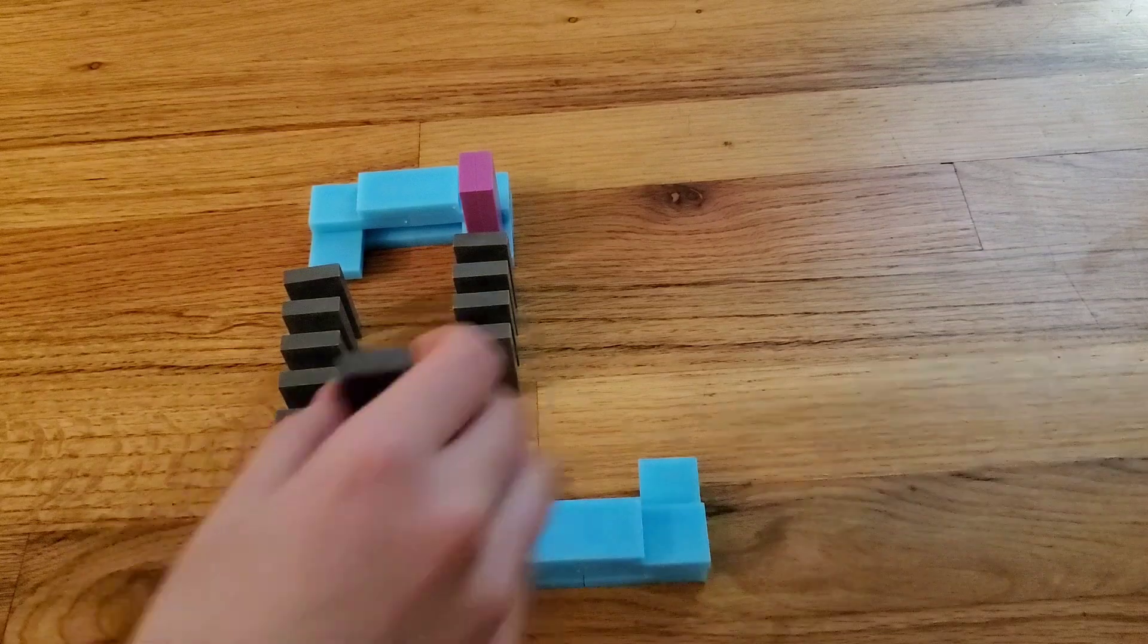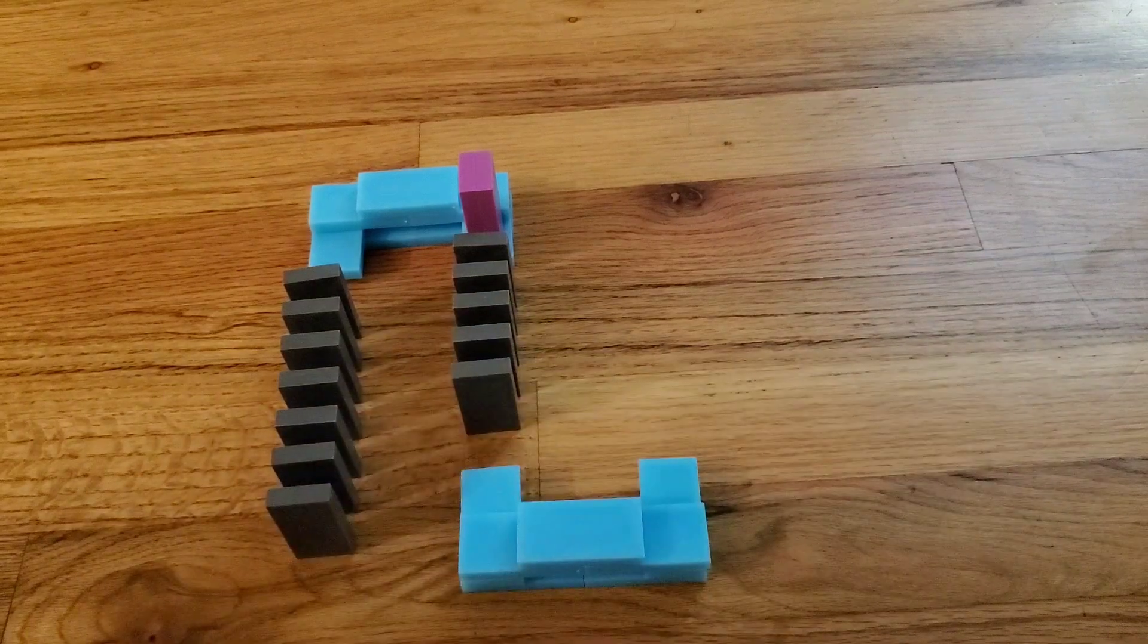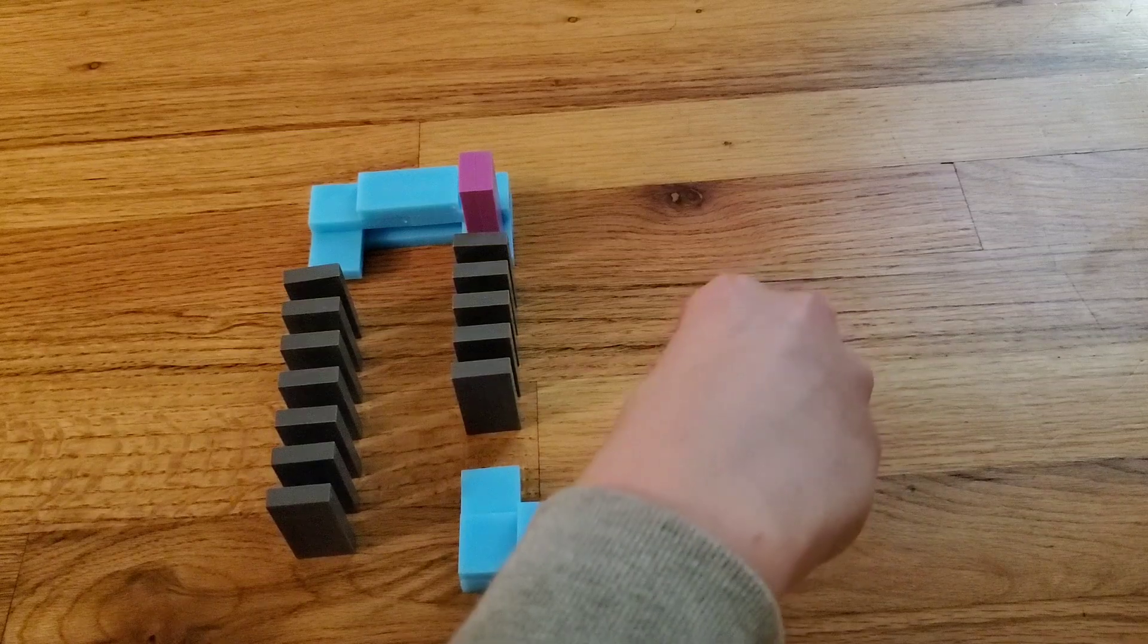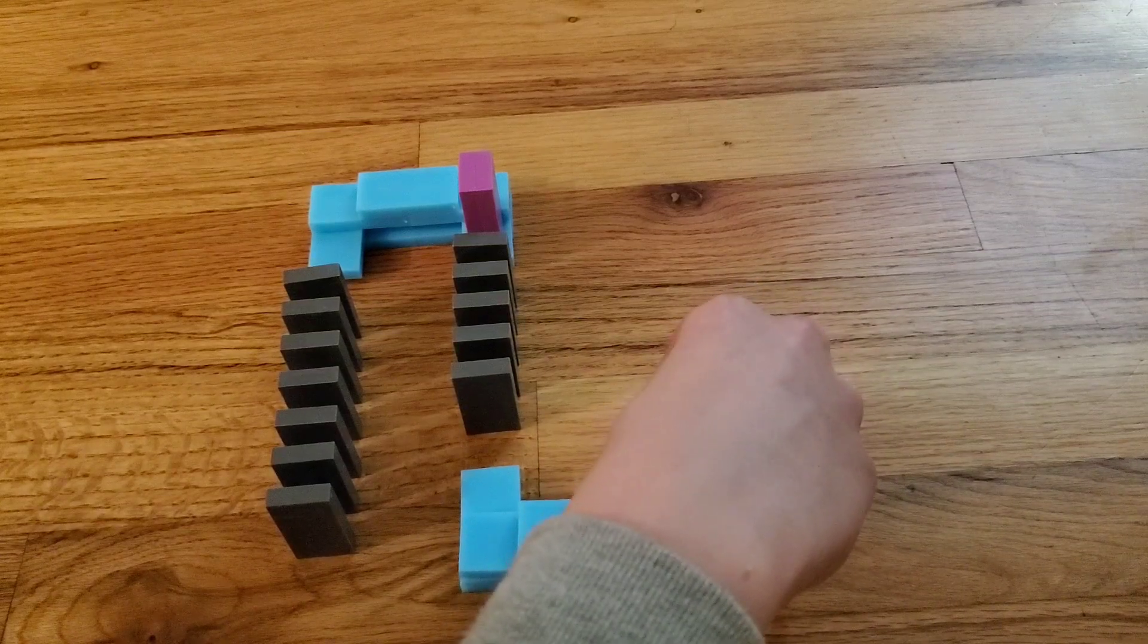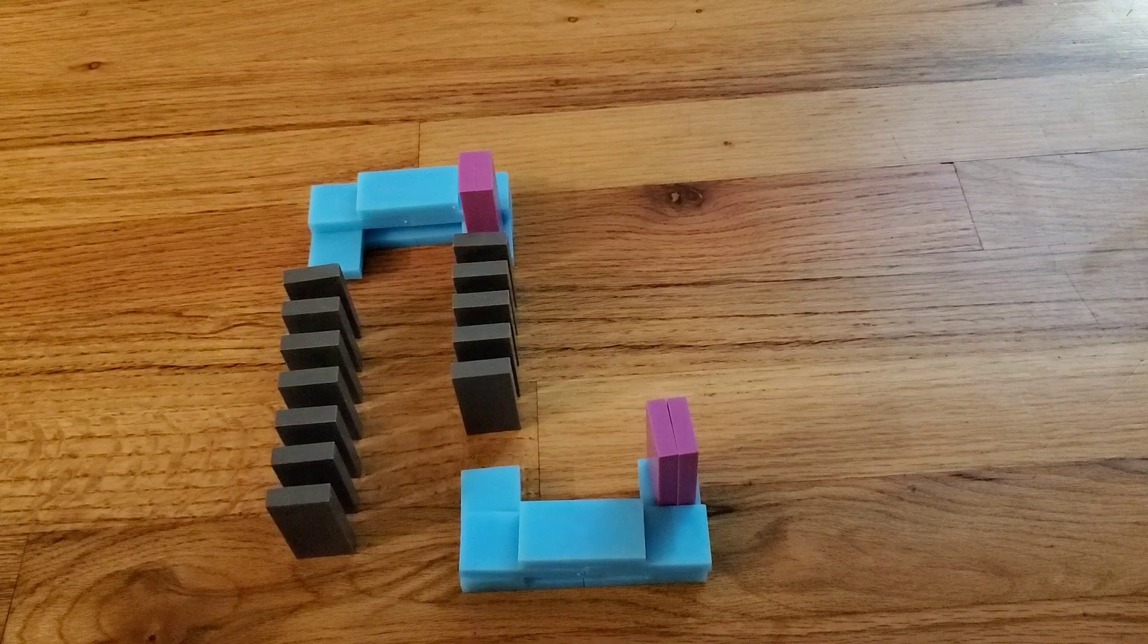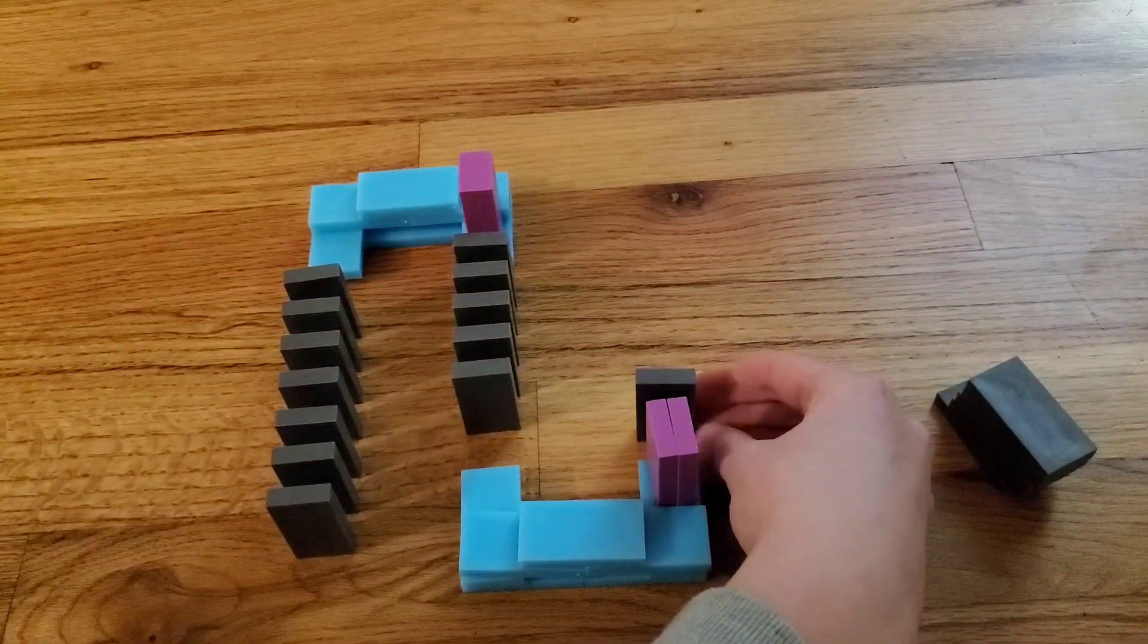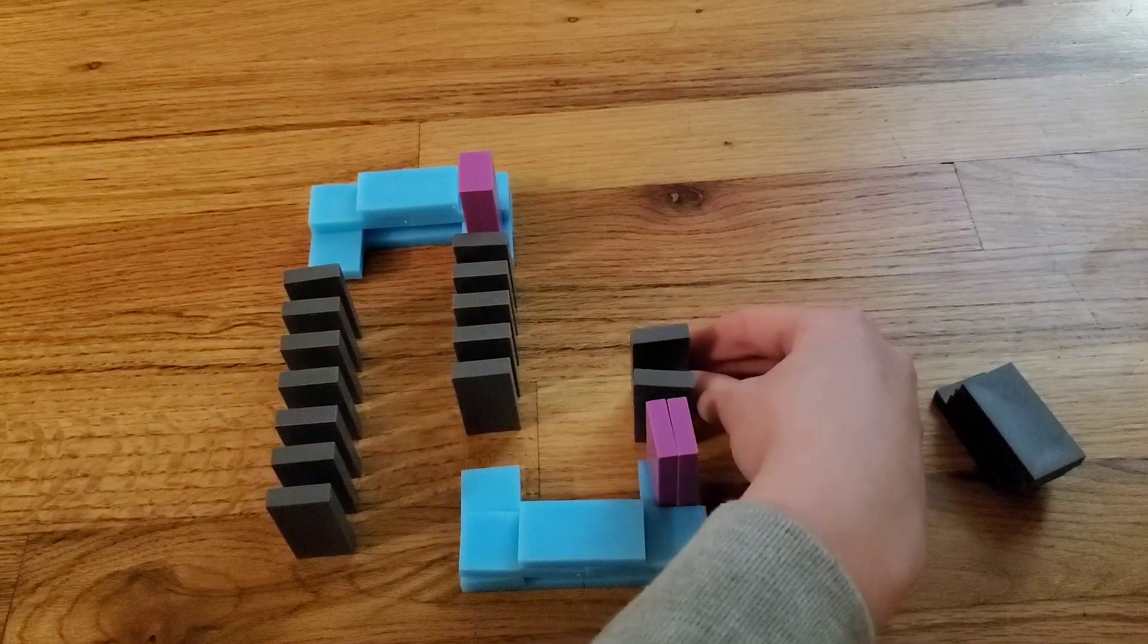Then place a gray domino right there, two raspberry dominoes right there, then continue a domino line leading away from the couch.